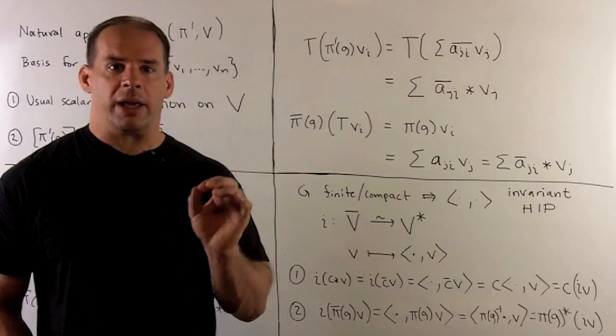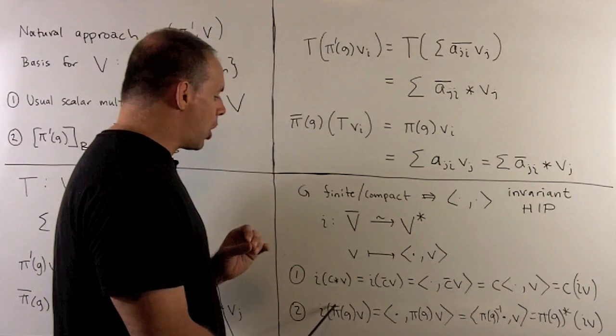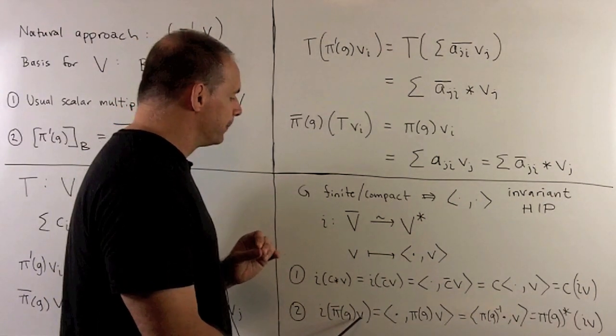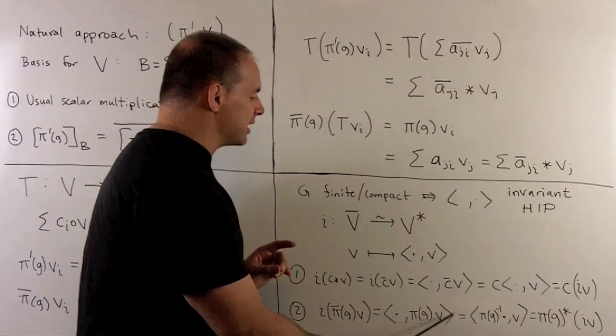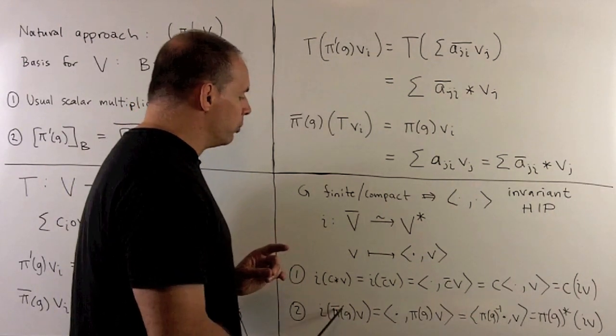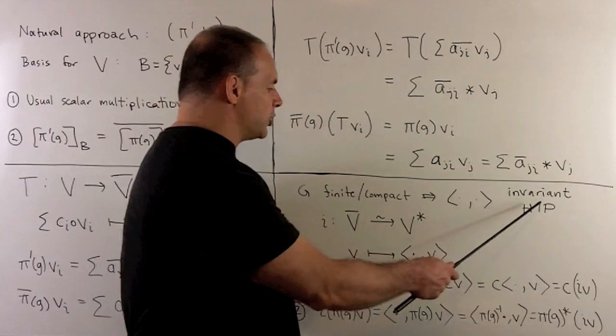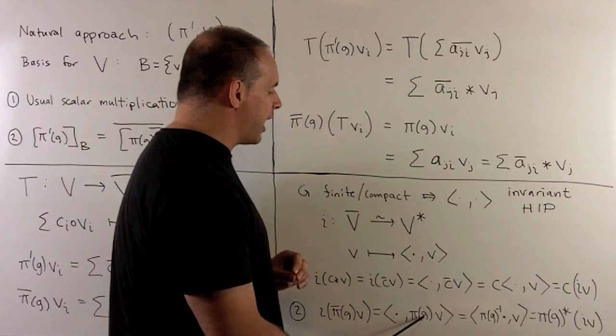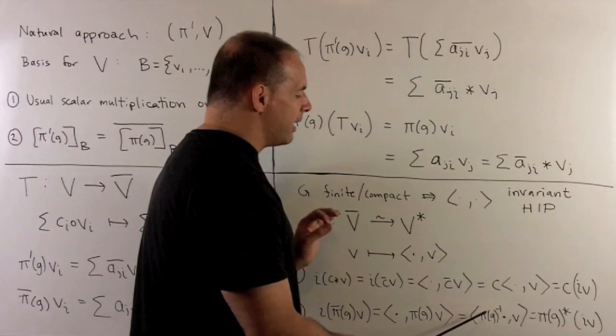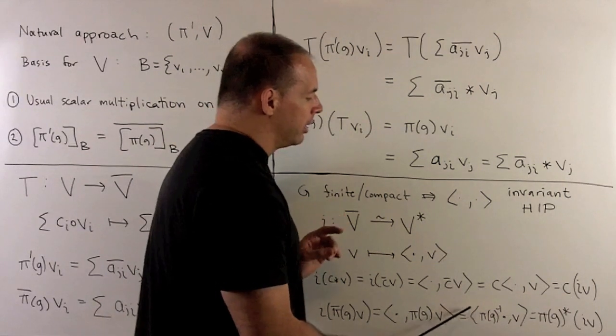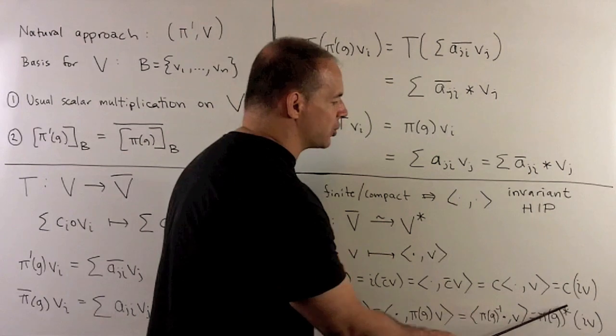Finally, for the intertwining property, we're going to apply I to pi bar of G on V. We're just going to move pi bar of G on V to the second slot. I can remove the bar because that's how we define our action. Then, by the invariance property, the pi G, I can move to the first coordinate as a pi G inverse. And then, that's how we act on elements that are in the dual of V. It's just going to be pi G of star on IV.